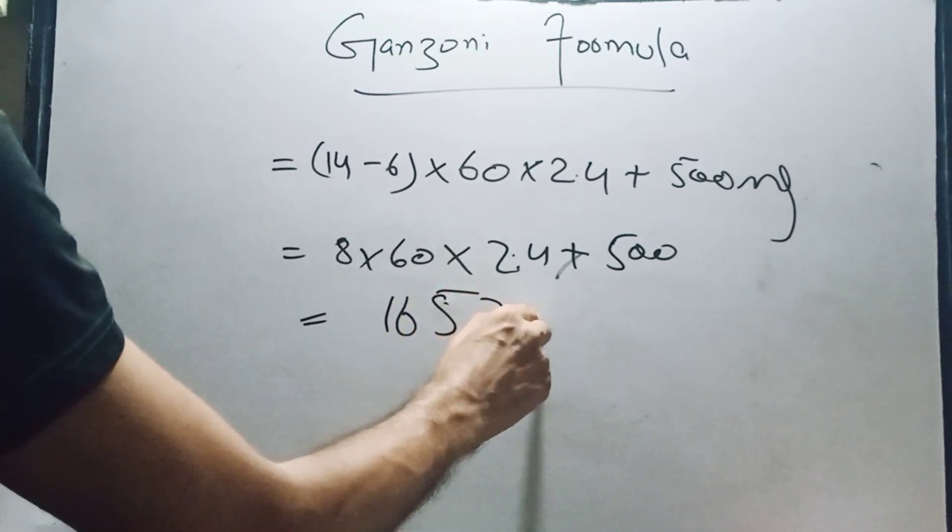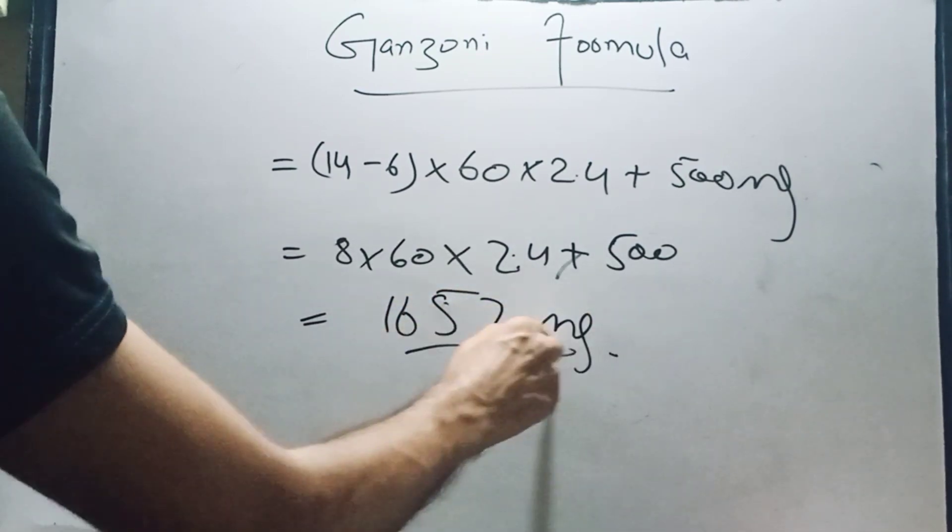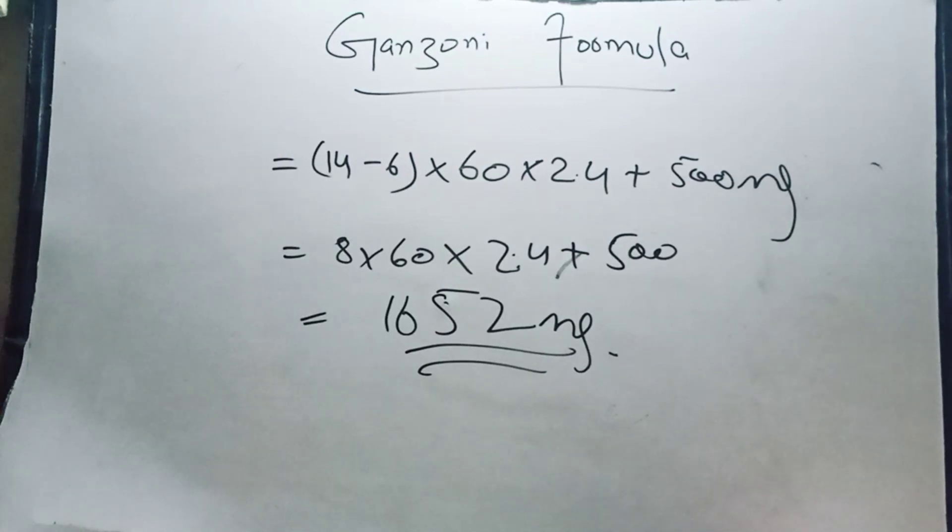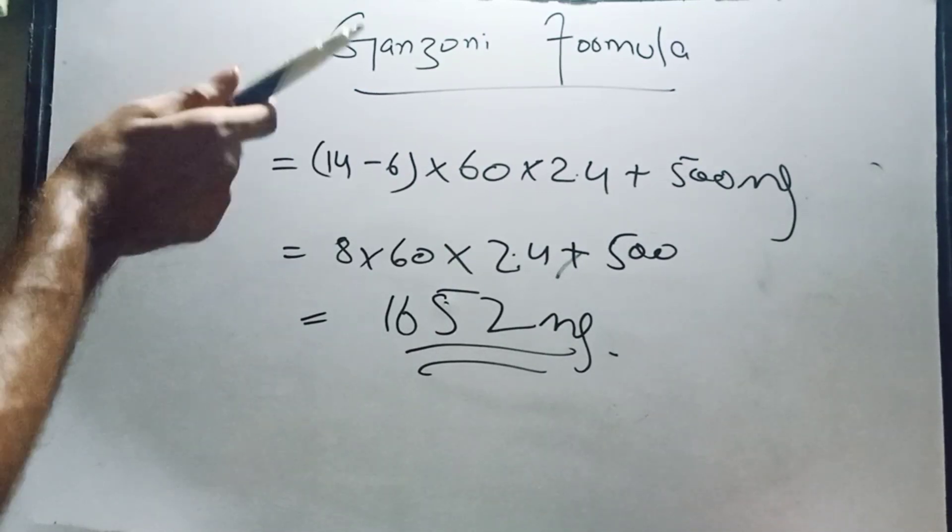The answer is 1652 mg. So we need 1652 mg of parenteral iron for a 60 kg patient with Hb of 6.